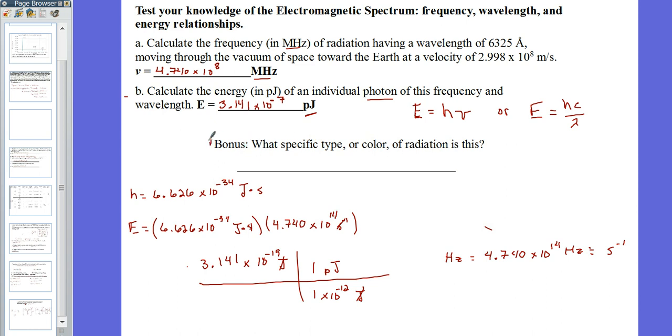Now for the bonus question: what specific type or color of radiation is this? To find that, look at your wavelength and use the color wheel from the absorption spectroscopy lab.